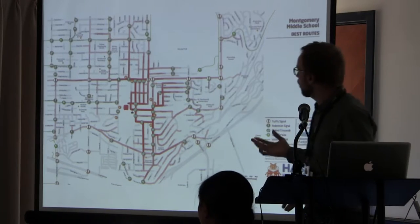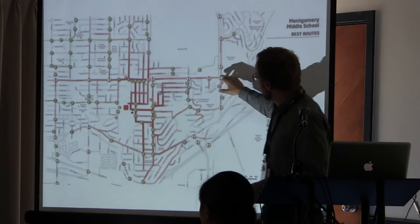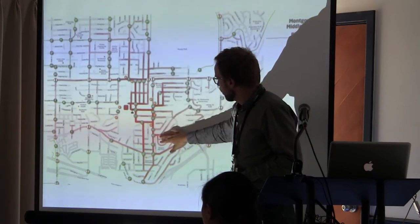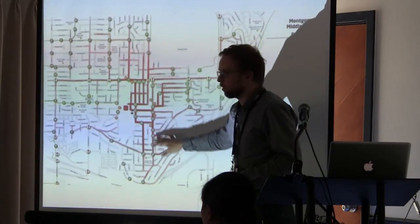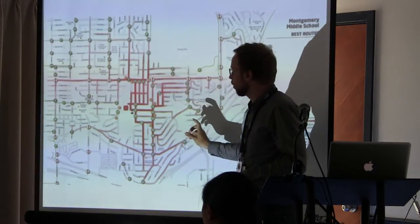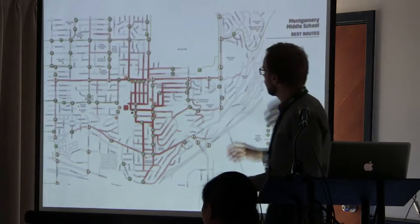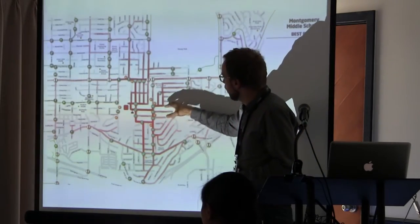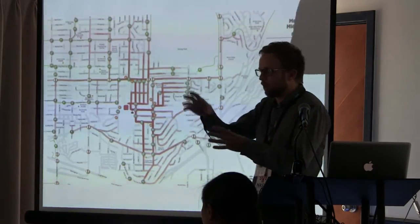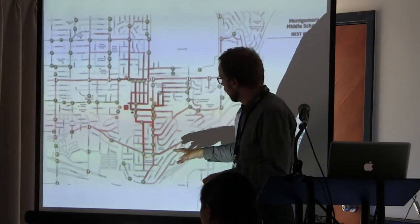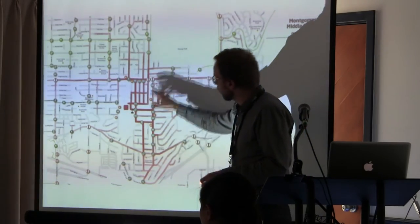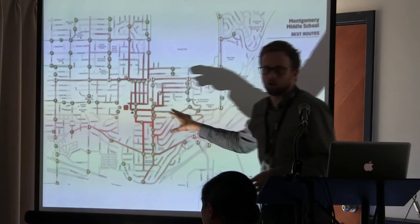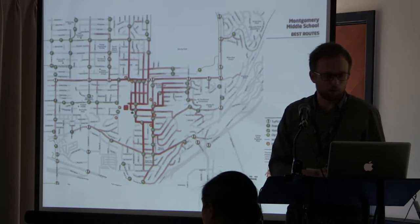We have another layer where we start to saturate the routes — the most popular routes appear in deep dark red, lighter as they become less popular. Now we can start to see, like a drain or funnel into the school, where students are coming from and where we might need to concentrate our programming.